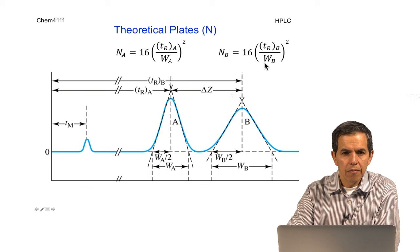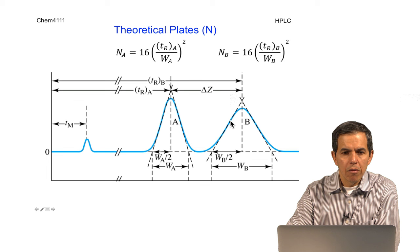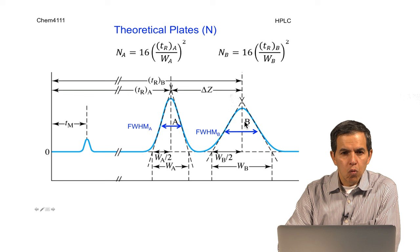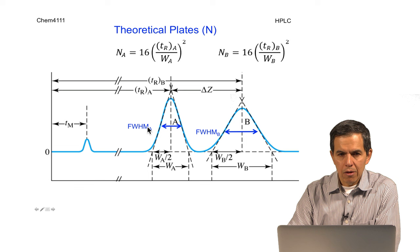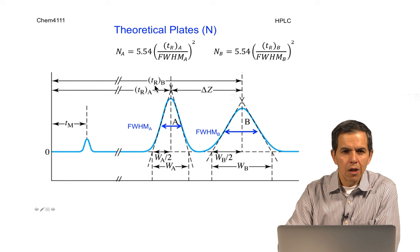In some instances, when the peaks cannot be fully resolved—that is, A and B overlap—it is necessary to modify such calculations and expressions. For instance, one can base the calculation of the theoretical plate on the full width at half maximum, or FWHM for A or B. The formula in that particular situation is modified to include, instead of the full width, the full width at half maximum of each of these different compounds.